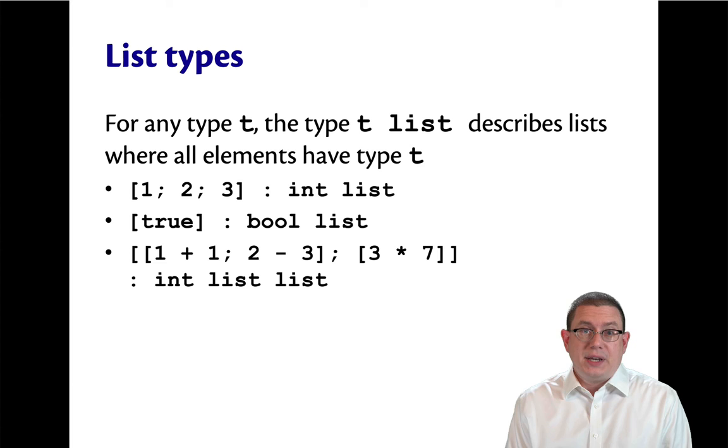So 1, 2, 3 is an int list. True is a bool list. We can have lists that are nested inside of other lists and so forth.